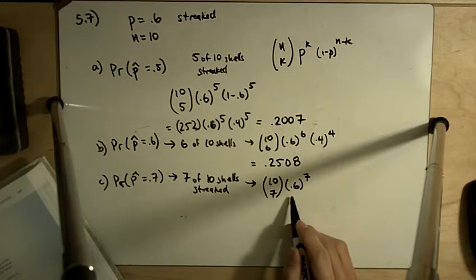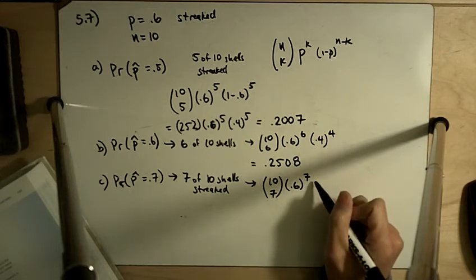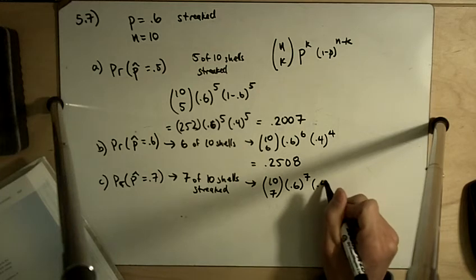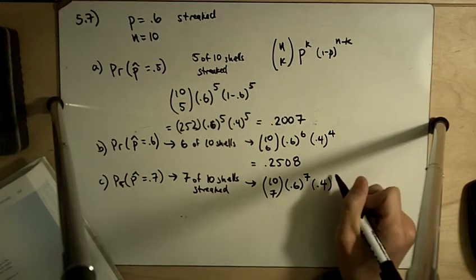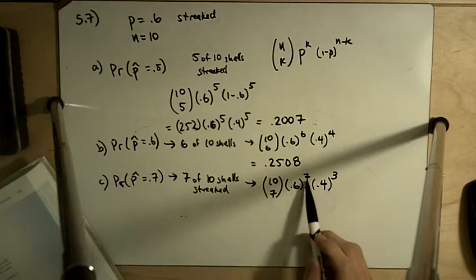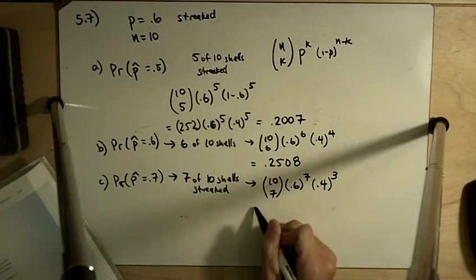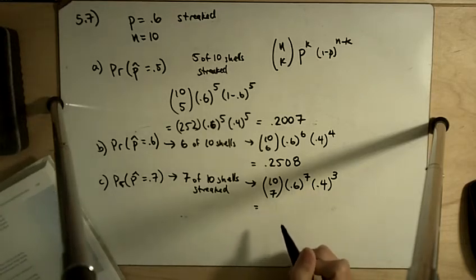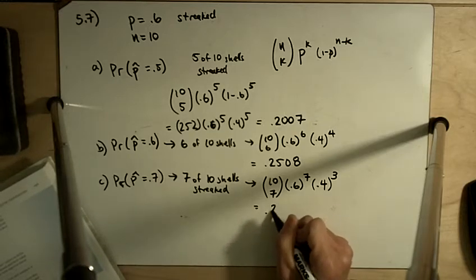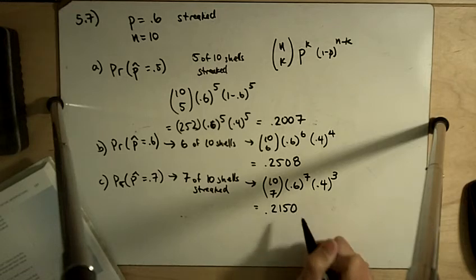This is the probability of being streaked, and we need to have 7 be streaked. And the probability of not being streaked or pallid is 0.4, so 3 of them will be pallid. K and n minus k, right there. And when you multiply that out, you get 0.2150.